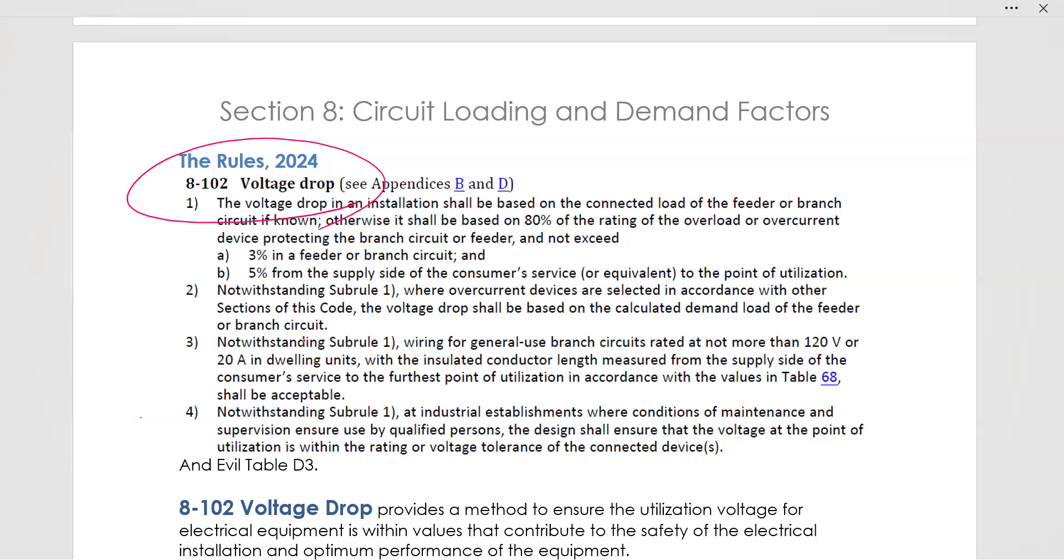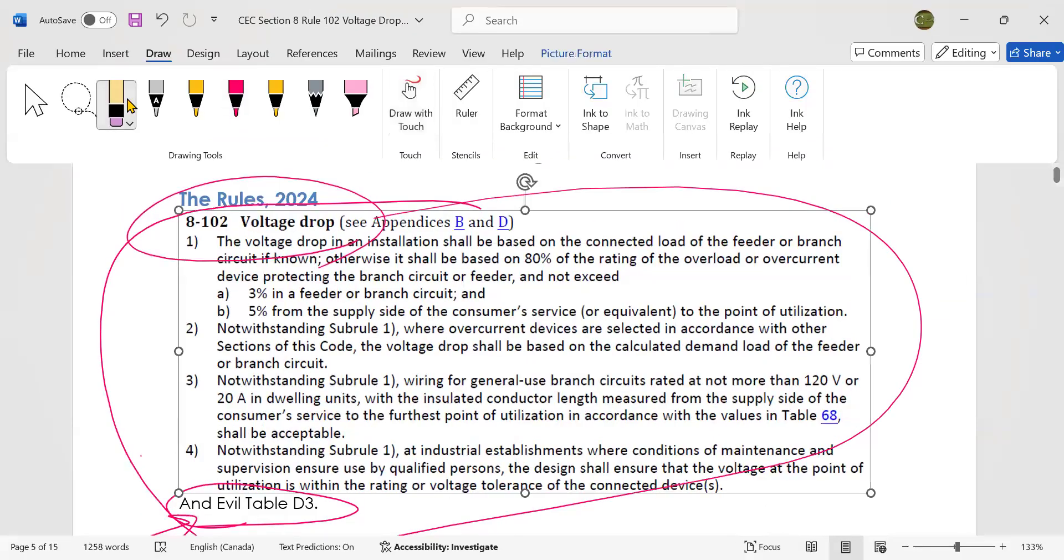Basically, there's going to be a difference between the voltage source to the voltage load or to the load that is going to use that. So it's going to drop a little bit throughout the conductor length. So the voltage drop calculations let us calculate how long the length of conductor can be for a given application. But let's look at the rule itself. The rule itself is only like this. I forgot, I still have the word evil in here, evil table D3, just because we don't like table D3. It's actually not so bad. If you watch my video on how to use table D3 in an organized manner, it's actually pretty simple.